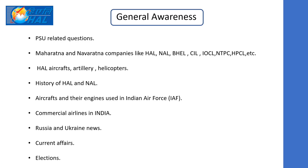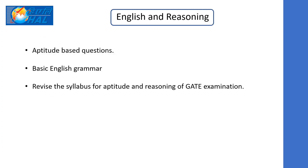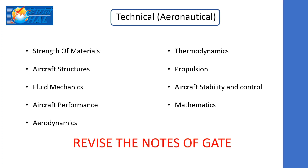For English and reasoning, there are 40 questions. These will mostly be aptitude-based questions. English will include grammar, composition, and sentences — similar to what you prepared for your GATE examination. This will be an easier part; just revise aptitude and grammar and you will be sorted for this section.